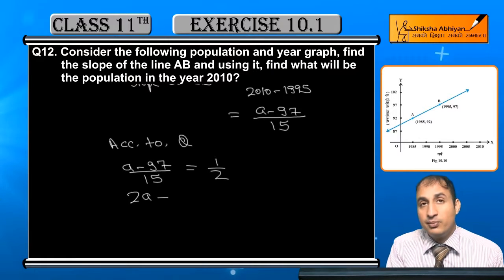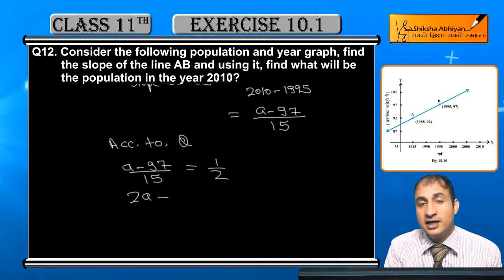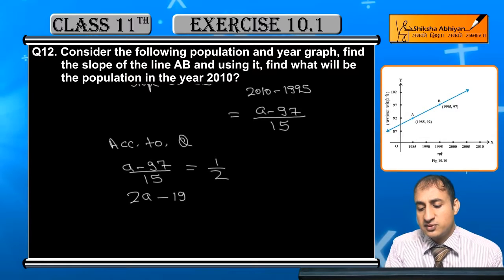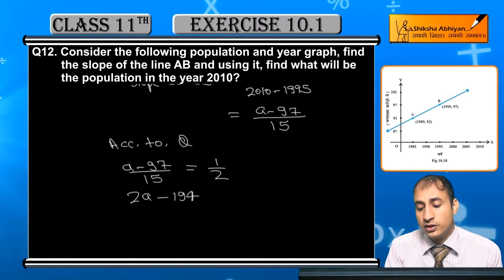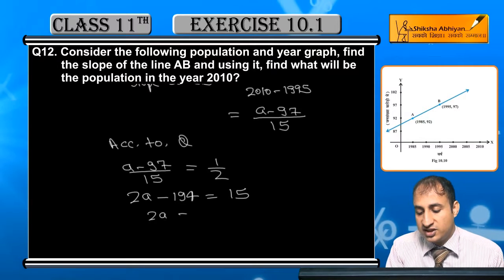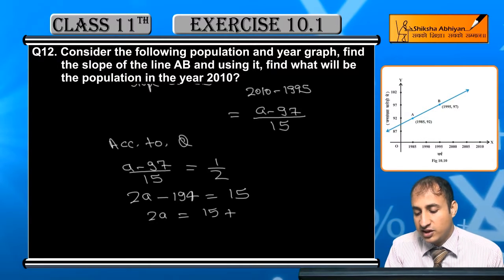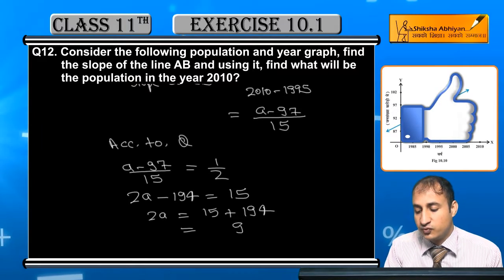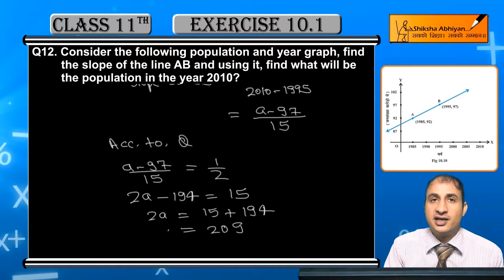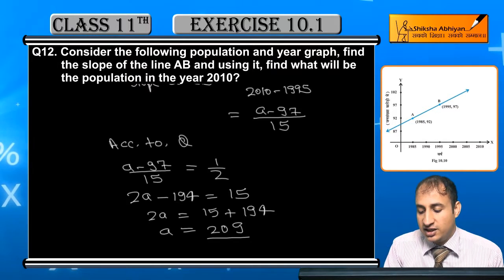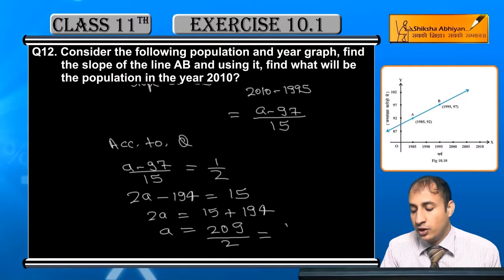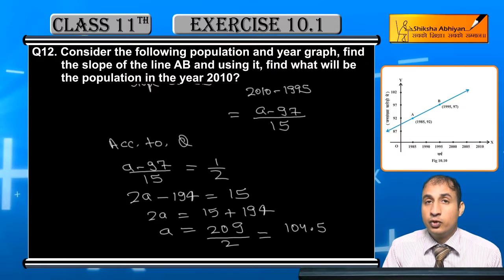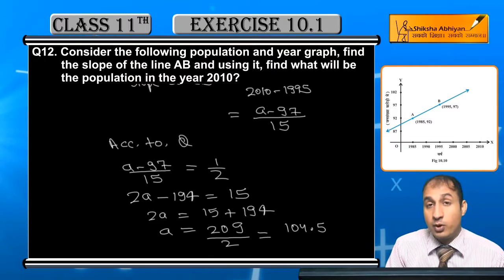Multiplying by 2, 2A minus 194 equals 15. When we calculate, we get 2A minus 194 equals 15. So 2A equals 15 plus 194. 15 plus 194 equals 209. So A equals 209/2, which is 104.5. 104.5 crores will be our population in 2010.